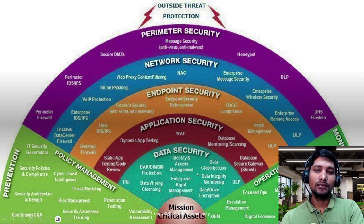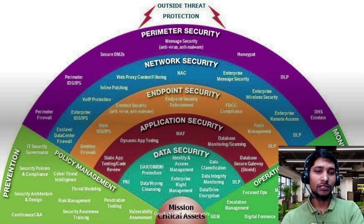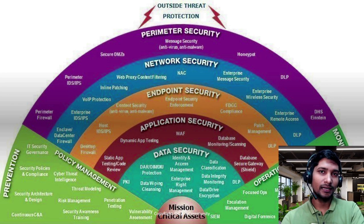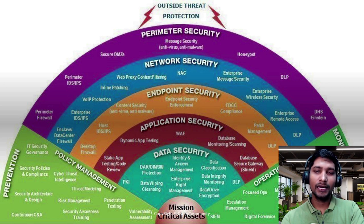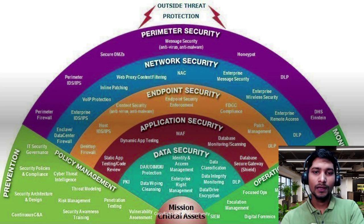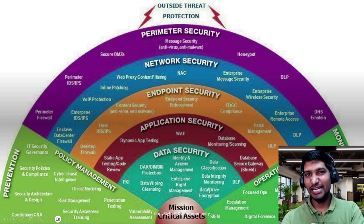At the last layer, data security — what exactly you do to secure your data. First, you can encrypt it using PKI (public key infrastructure). You can use IAM — identity and access management — and RBAC (role-based access control) to give particular roles to particular persons, providing only the access that is required. Enterprise rights management, data integrity monitoring, and drive encryption are also used to secure your data.